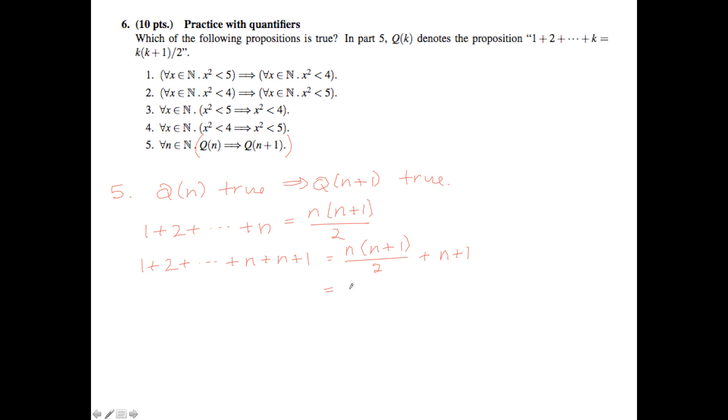Then this we can rewrite as, let's pull the 2 out, we get n times n plus 1. Let's just bring this term down, plus 2 times n plus 1, because we wrote this guy as 2 over 2. So now we get 1 half, and when we combine these terms, times, we see that we have n plus 2 times n plus 1.